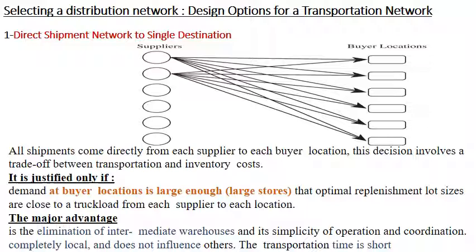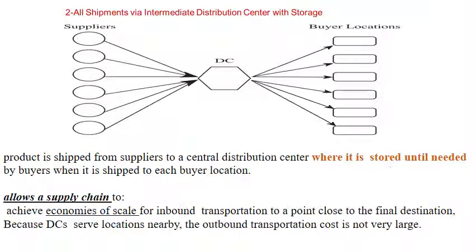Advantages of direct shipment network: it eliminates intermediate warehouses, offering simplicity of operation and direct coordination between suppliers and buyer locations. Transportation time is short because the distance between suppliers and buyer locations is short.